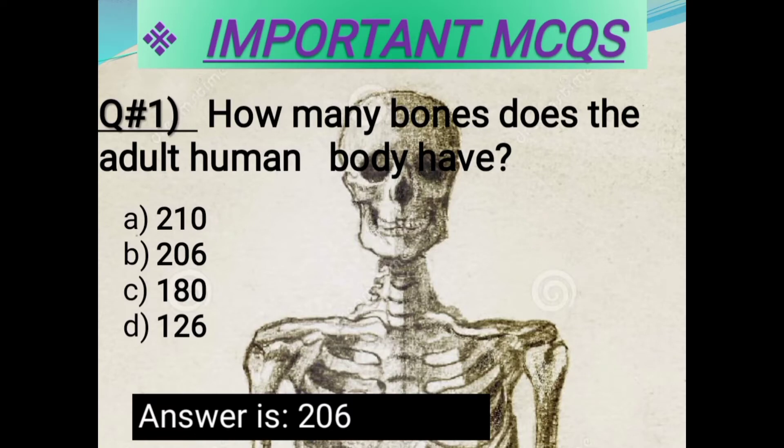Question number one: How many bones does the adult human body have? Options: 210, 206, 180, or 126. The correct answer is 206.